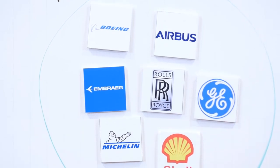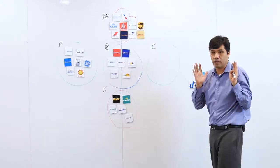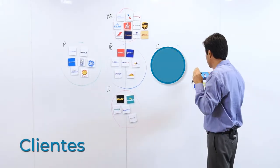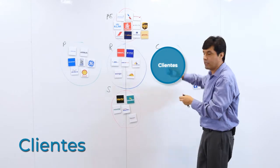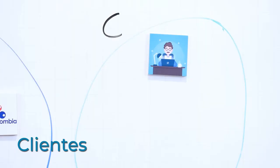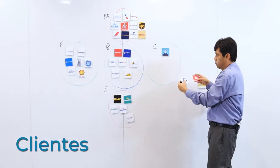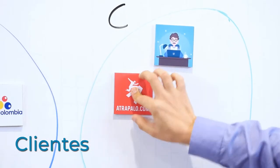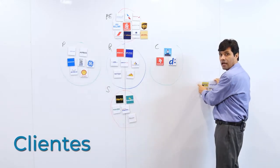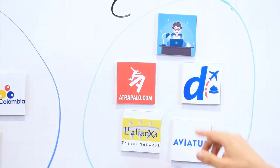Finalmente, para cerrar estas cinco fuerzas, incorporamos a quienes son los clientes. Los clientes más interesados seríamos nosotros mismos, y ahora tenemos la posibilidad incluso de comprar tiquetes a través de internet. Hay algunas plataformas que lo hacen de manera constante, como Atrápalo o Despegar, o en la forma tradicional de las agencias de viajes, como La Alianza y Aviatour.